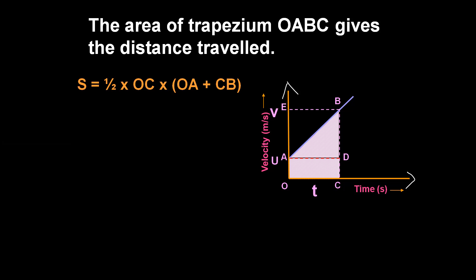This is the area of the trapezium O, A, B, C. The formula is half into H into (A plus B). This is the height of the trapezium, which is the length OC. The parallel sides are OA and BC. So the formula becomes: half into H into (A plus B).